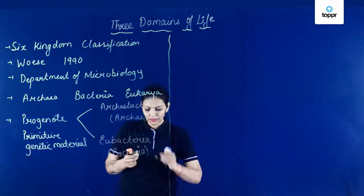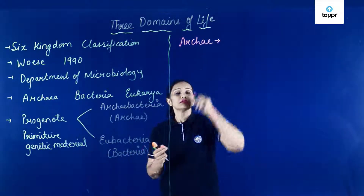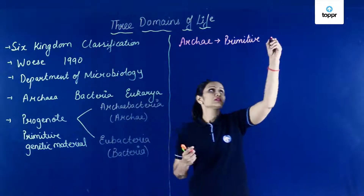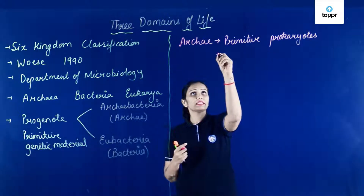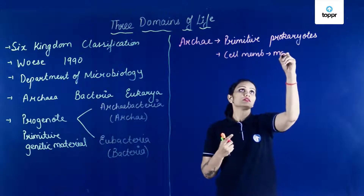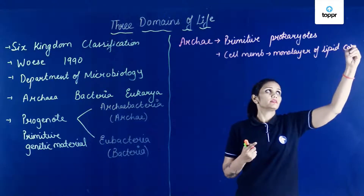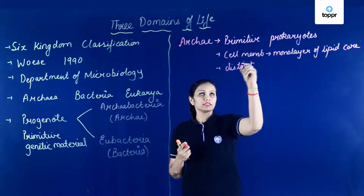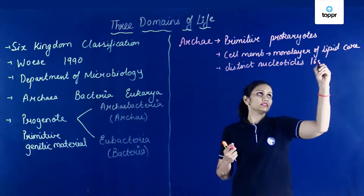Now let's talk first about the Archaea. Jo ye Archaea hai, iske andar primitive prokaryotes aate hai. In primitive prokaryotes ki distinguishing feature kya hai? Jo in ki cell membrane hai — in their cell membrane, wahan pe monolayer of lipids present hai in its core. Aur distinct nucleotides present hai in its 16S RNA.